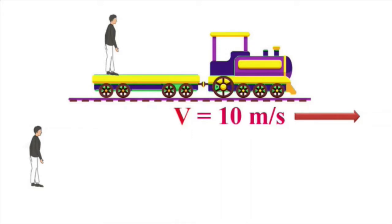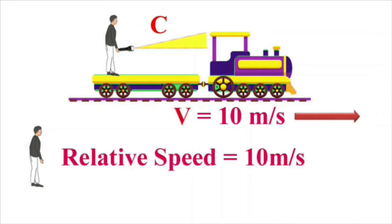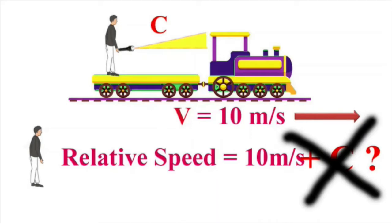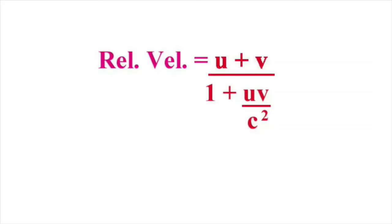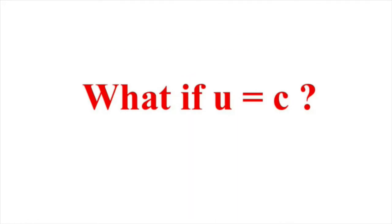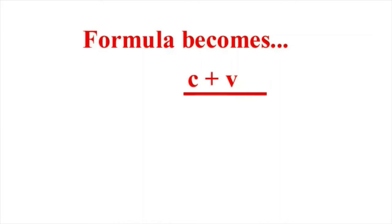Back to the train again, moving at 10 meters per second. This time the man on the train isn't walking, but rather he's holding a torch and shines a beam of light in the direction of the train. The light travels at C. What is the relative speed of the beam of light to the observer? Is it simply the speed of the train plus C? The answer is no — it doesn't work like that in the theory of relativity. Our new formula: U plus V divided by 1 plus UV over C squared. What if U equals C? The formula now becomes C plus V divided by 1 plus CV over C squared, which equals C.